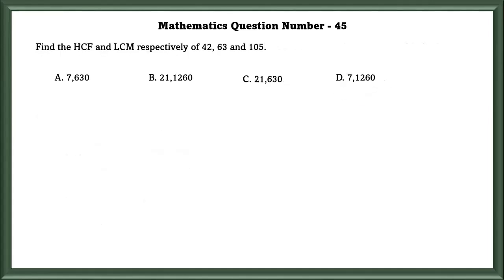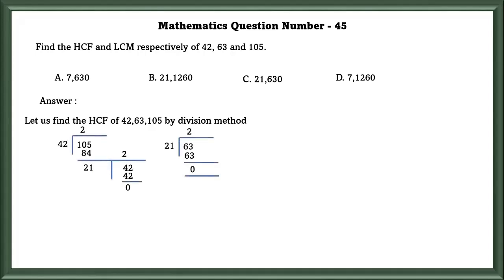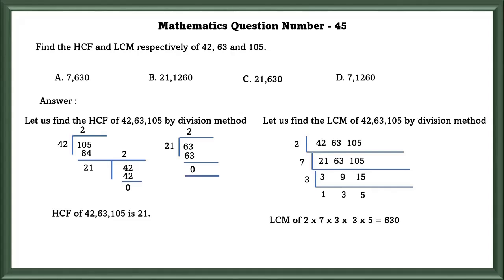Mathematics question number 45. Find the HCF and LCM of 42, 63, and 105. Let us find HCF of these numbers by the division method. So the HCF of these numbers using division method equals 21. Let us do the same with LCM and we will use the same division method. So LCM of these numbers equals 630. That is the C option.